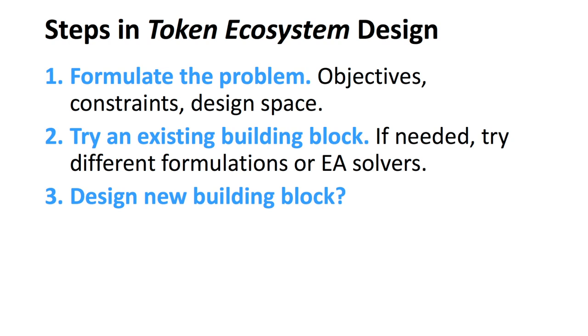You can actually take these same steps and apply them to token design — designing tokenized ecosystems. Formulate the problem: what are the objectives, the constraints, the design space? Then try an existing building block — you can call them crypto-economic primitives, though it might be higher-level stuff. Only if needed do you try different formulations or different solvers. And then if needed, you design a new building block — but only if needed. It's super tempting to come up with something new and fancy, but you're better off spending your efforts on where the actual problems lie.